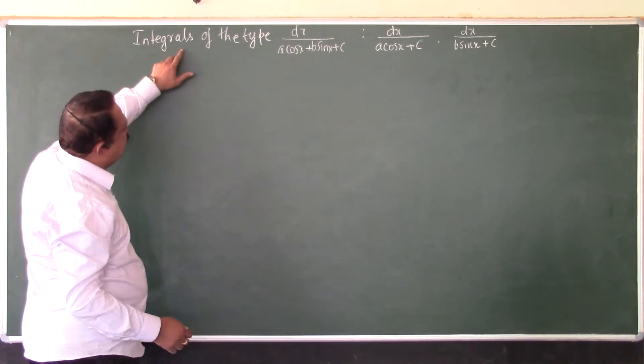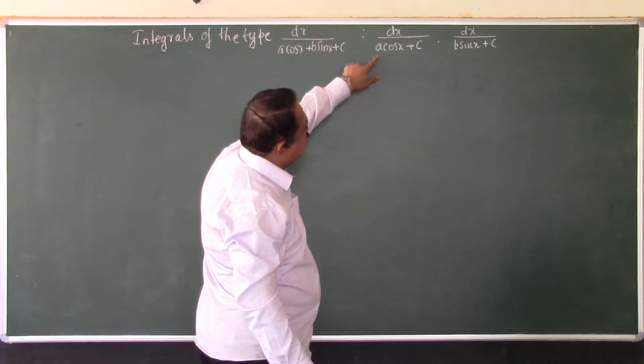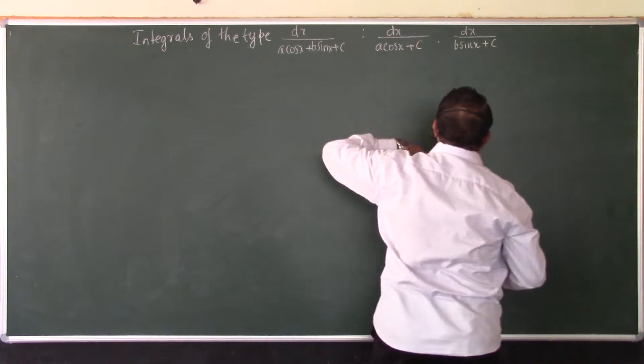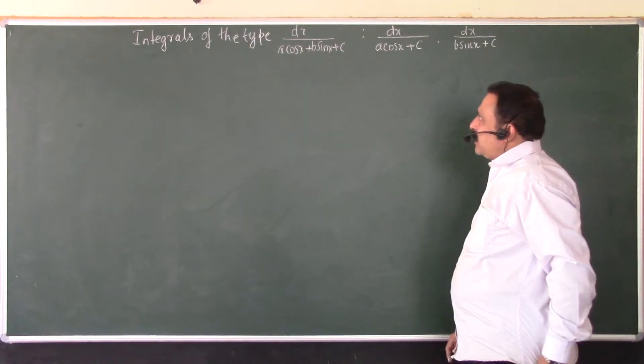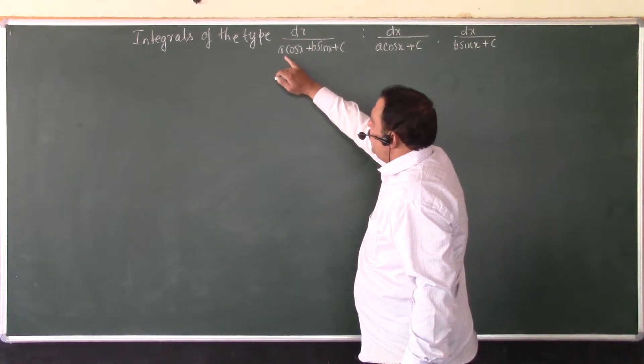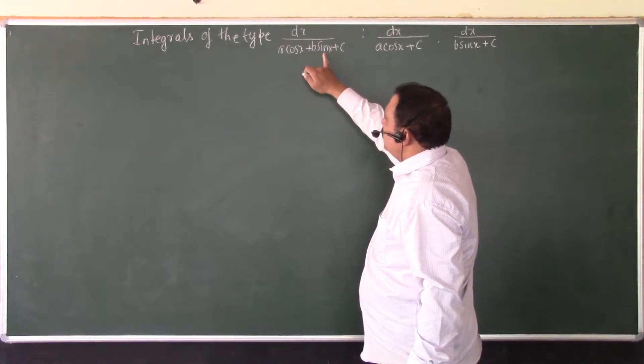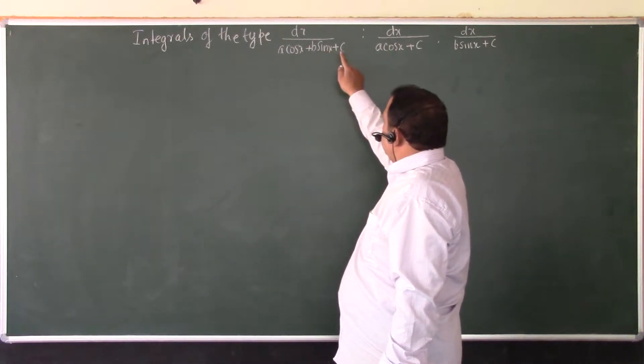Okay, now we shall consider the integration of the type dx/(a cos x + b sin x + c), or dx/(a cos x + c), or dx/(b sin x + c). This type of integration is very important for the examination. The given integral in the denominator can consist of cos x and sin x terms, or simply a cos x term, or just sin x term, but both cos x and sin x terms should be in first degree.